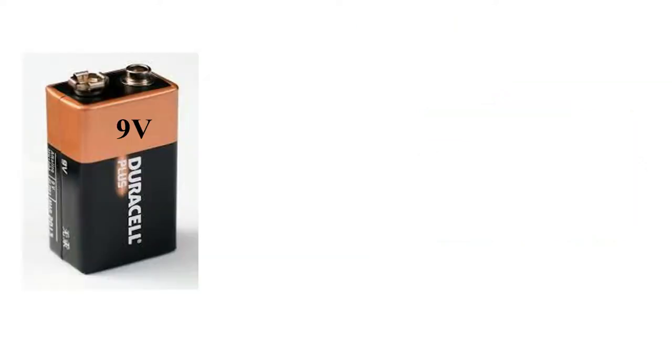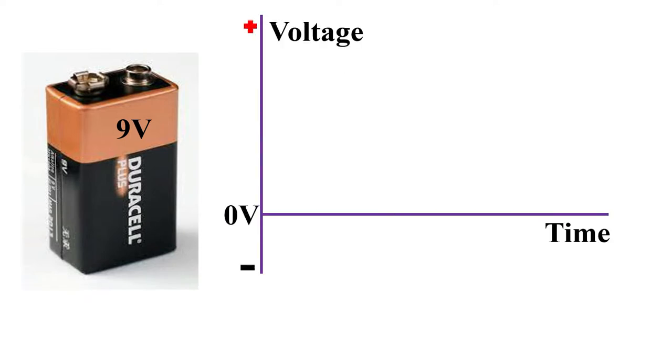Let's take a battery of 9 volts. It produces 9 volts constant DC. If we plot this over time, here the vertical axis shows voltage or current and the horizontal axis measures time. So, we can plot a constant voltage of 9 volts over time.